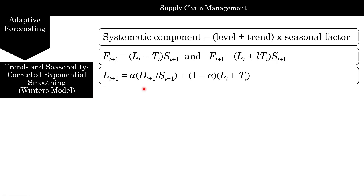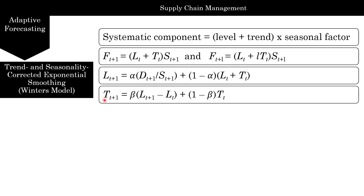The level is alpha times the ratio of actual demand to seasonality. By dividing actual demand by seasonality, we remove the seasonal factor, leaving just the forecast without seasonality. That gives us the new level. The trend update is the same as trend-corrected exponential smoothing: beta times the difference in levels.